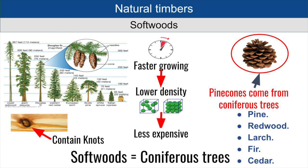Softwoods also contain knots — as you can see on the slide — which are darker visual imperfections where a branch or the base of a branch once lived, and the grain of the wood grows around that knot. So although they are cheaper, they do come with some sacrifices. Hence the reason you really need to consider what application you need the timber for before deciding between hardwood or softwood. They're generally not as aesthetically pleasing and don't have as nice a grain as hardwoods, so in high-end products most people would choose hardwood.